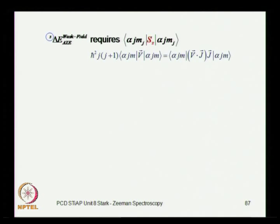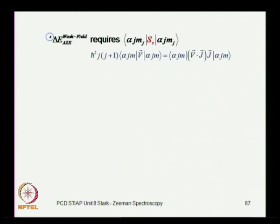We considered the strong field effect and the Paschen-Back effect, and our active consideration now is on the study of the weak field Zeeman effect. At these magnitudes of the applied magnetic field, the spin-orbit interaction is the dominant interaction, because the applied magnetic field is weak.